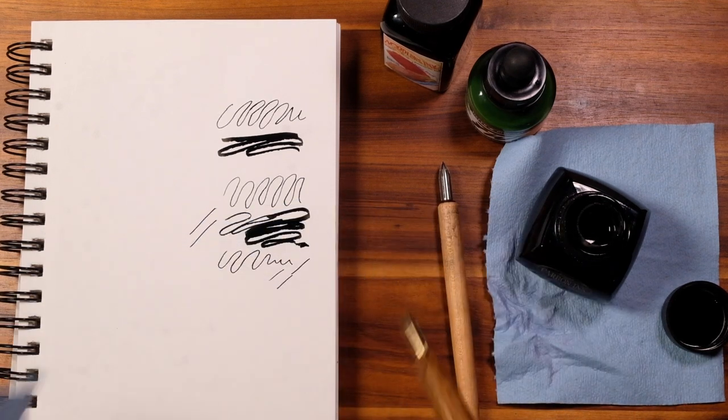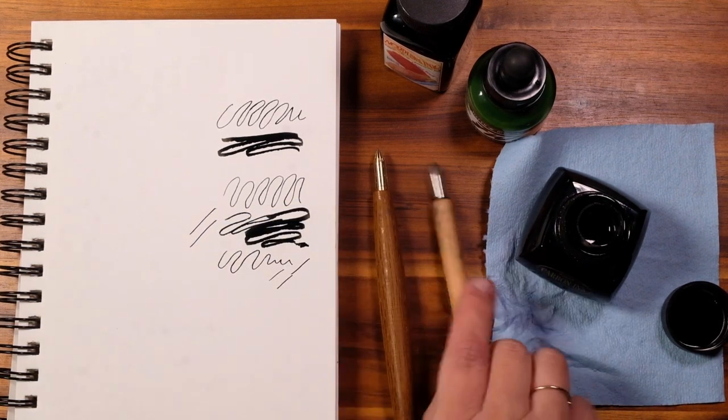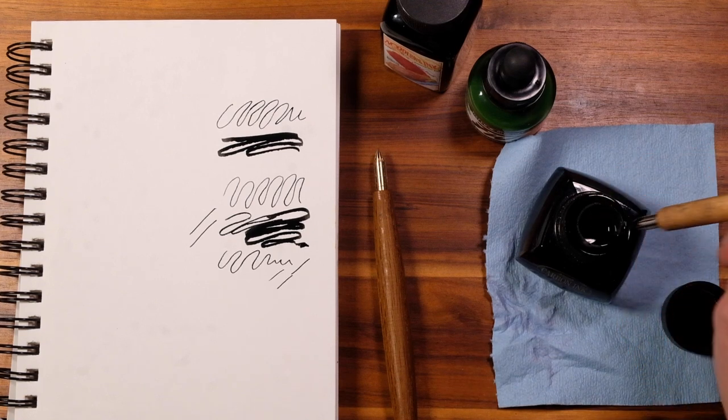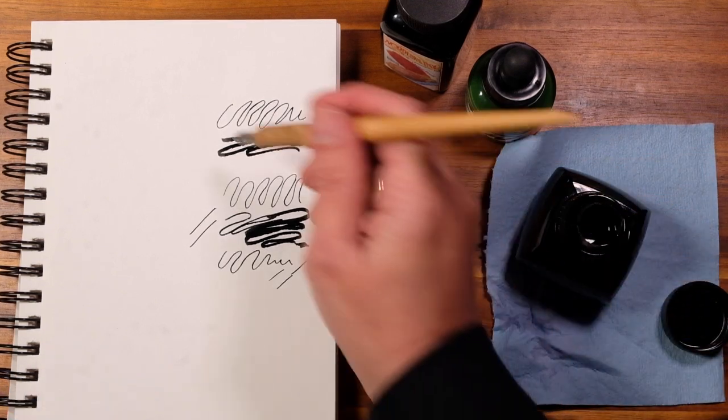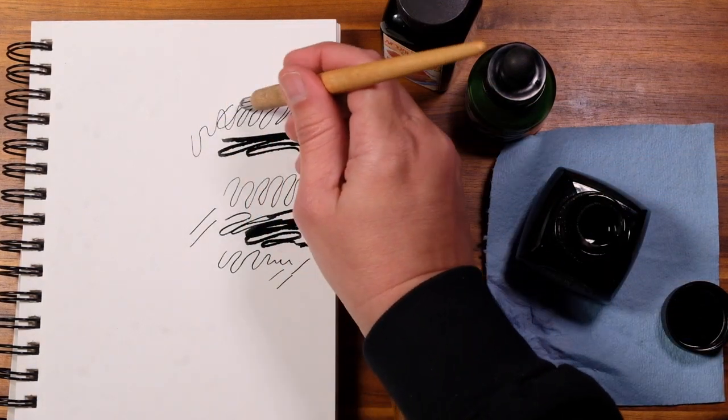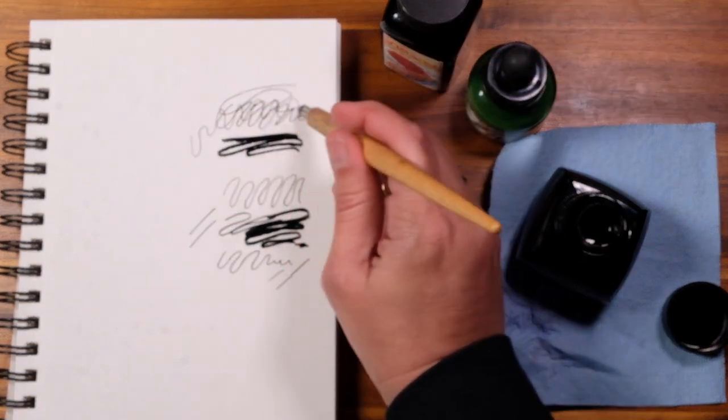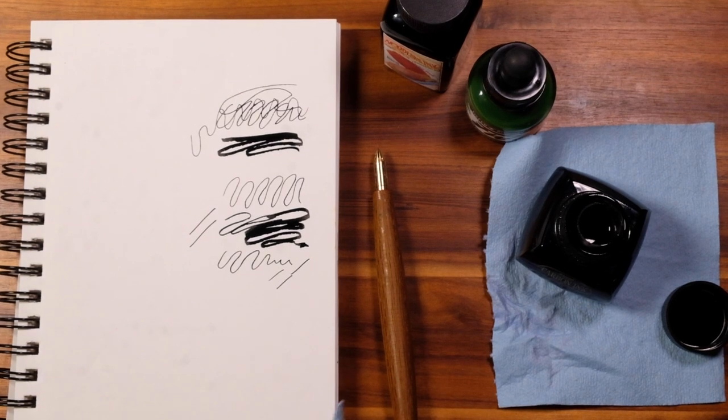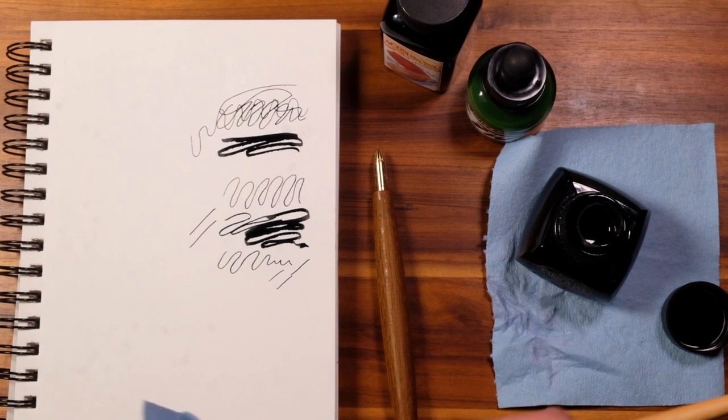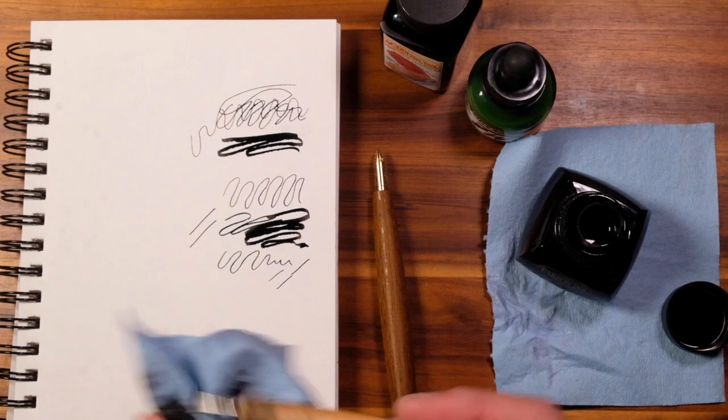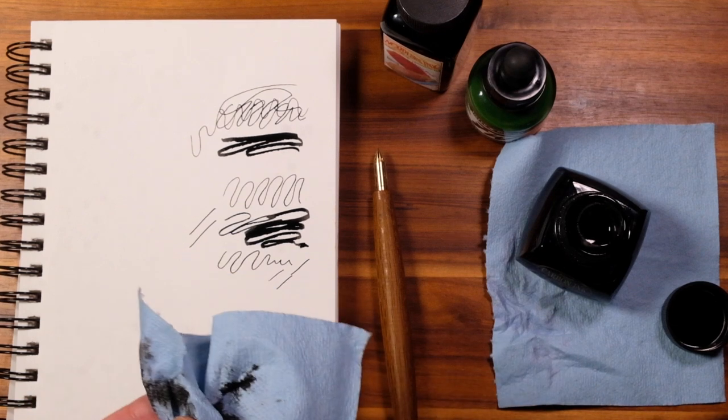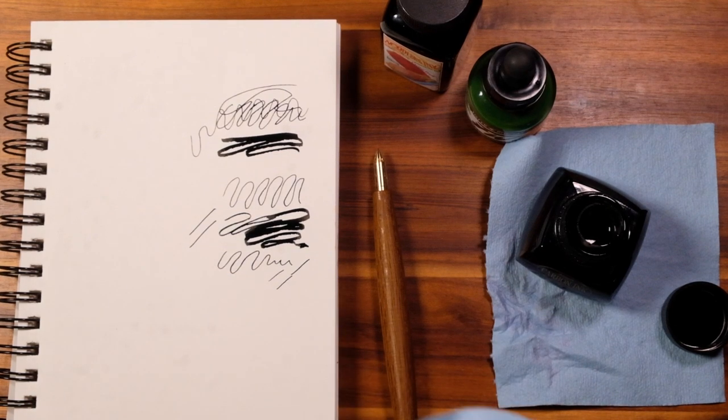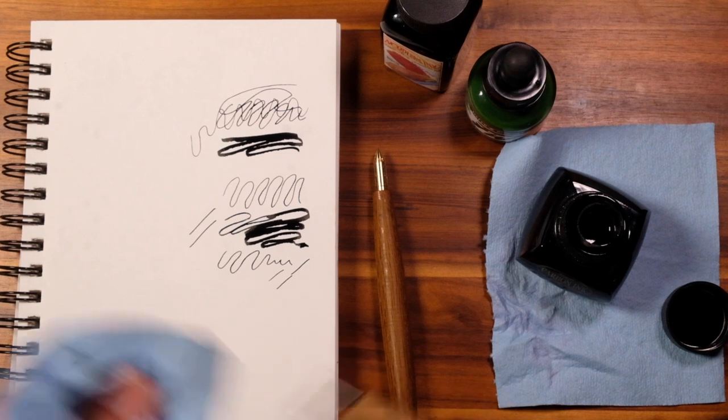Just rinsing that off. Let's try this back to back again. Yeah, this one, you cannot hear it pull on the paper half as much as you can with the brass one. So, if you like more feedback, you definitely want the brass one. If you like a smoother feel, then you definitely would go for the silver one.